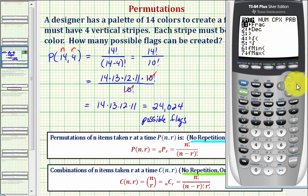Right arrow to probability, notice option two is for permutations. So we press two.